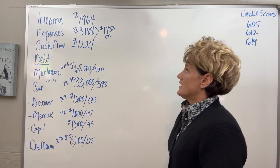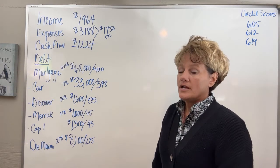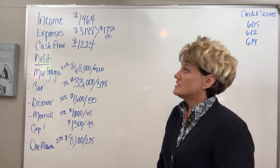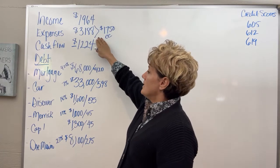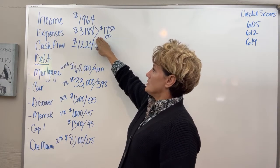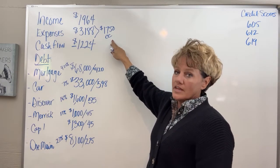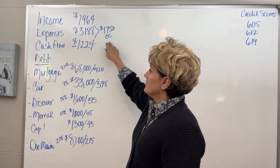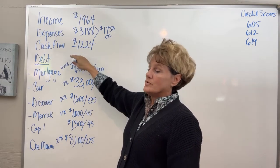Let's talk about his income. He is on unemployment at this time, and the total income for the month, four weeks, is $1,964. He has a total expense of $3,188. $1,750 of that can be put on credit cards. His cash flow is a negative $1,224.